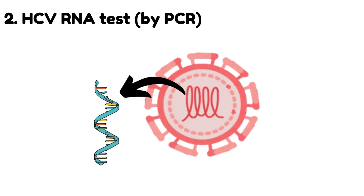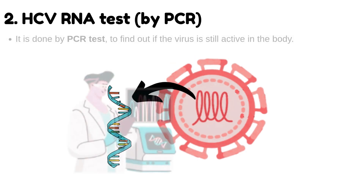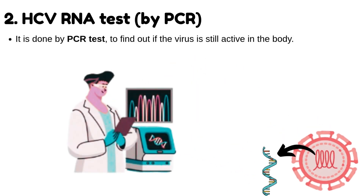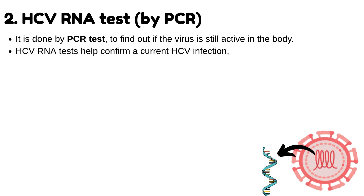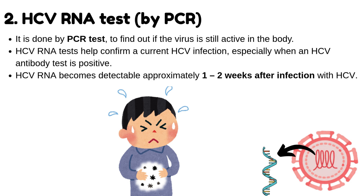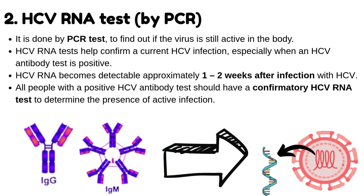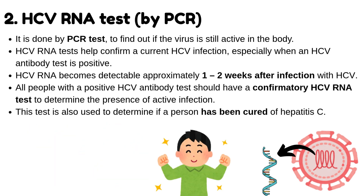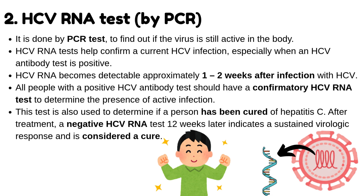Number 2: HCV RNA Test by PCR. This test is done by PCR to find out if the virus is still active in the body. HCV RNA tests help confirm a current HCV infection, especially when an HCV antibody test is positive. HCV RNA becomes detectable approximately 1–2 weeks after infection. All people with a positive HCV antibody test should have a confirmatory HCV RNA test to determine the presence of active infection. This test is also used to determine if a person has been cured of Hepatitis C — after treatment, a negative HCV RNA test 12 weeks later indicates a sustained virologic response and is considered a cure.